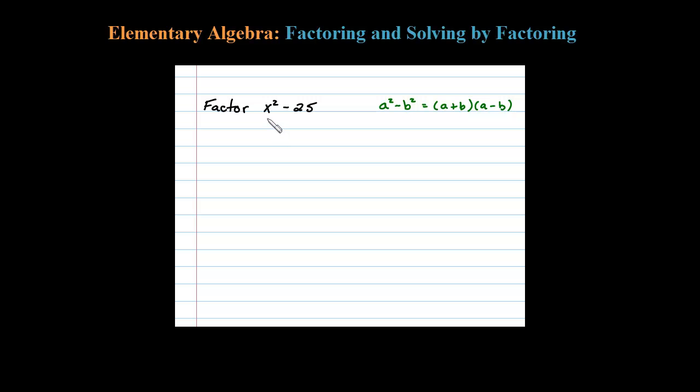It just turns out that we have to identify a, which in this case is x, and b, in this case 5. So when I factor this, a is x, so a plus b times a minus b, so x plus 5 times x minus 5 is the factorization.